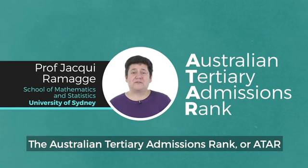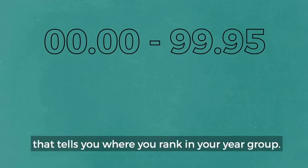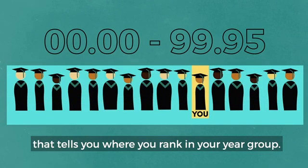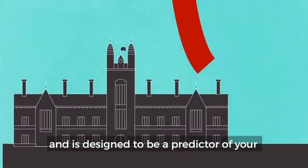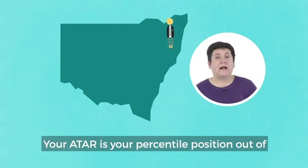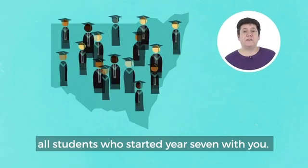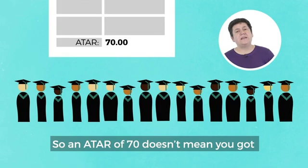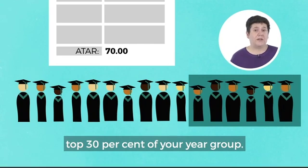The Australian Tertiary Admissions Rank, or ATAR, is a number between 0 and 99.95 that tells you where you rank in your year group. It's based on overall academic performance and is designed to be a predictor of your first year performance at uni. Your ATAR is your percentile position out of all students who started Year 7 with you. So an ATAR of 70 doesn't mean you got 70% — it means that you're in the top 30% of your year group.